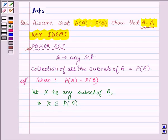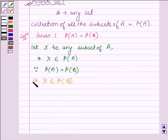This implies X belongs to the power set of A, and since power set of A is equal to power set of B, this further implies that X belongs to the power set of B, which implies that X is a subset of set B.